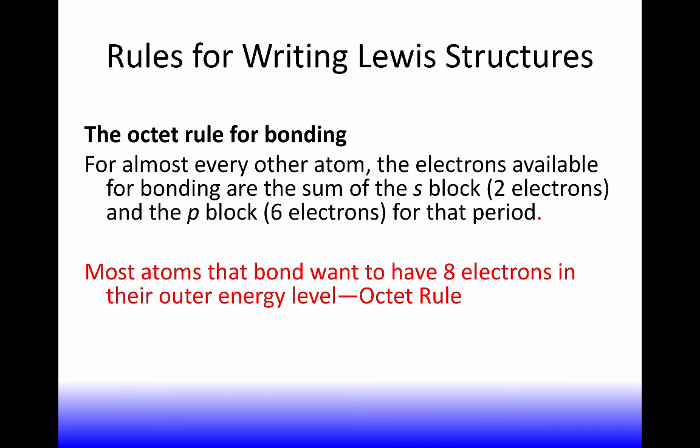Okay, most atoms that bond, I say want to have, they don't really want anything, they're atoms. But have their most stable energy organization if they have eight electrons in their outer energy level. And that's why it's called the octet rule. That outer energy level is the orbitals on the surface, which are the S and P orbitals at the very highest period in which the element is found.